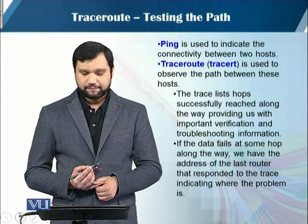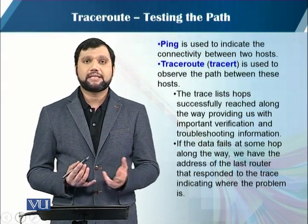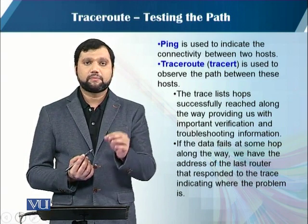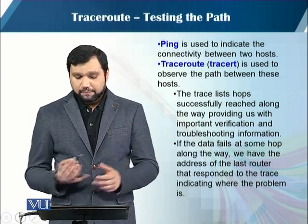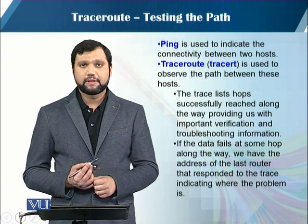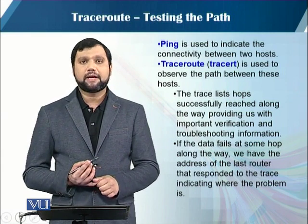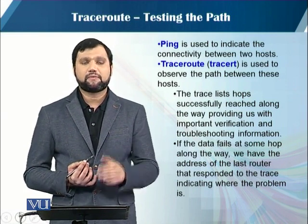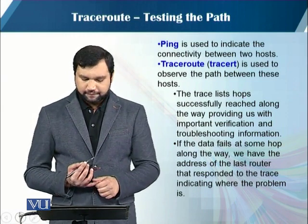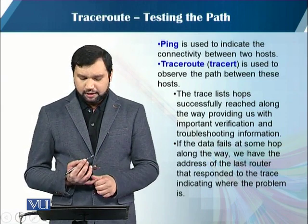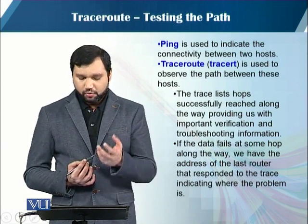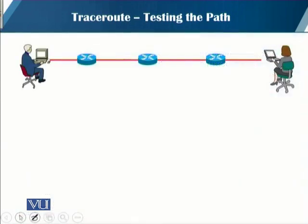The next application is traceroute, which also uses ICMP messages. It tests the path that a packet takes from source to destination. While ping indicates connectivity between two hosts, traceroute observes the path between the two machines. It lists the number of hops taken from source to destination. If data fails at some hop along the way, we have the address of the last router that responded, indicating where the problem is.